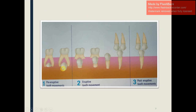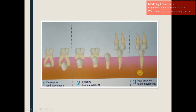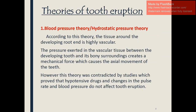Eruptive tooth movement is when the permanent tooth resorbs the roots of the deciduous teeth and moves into its occlusal position — first intraosseously, then extra-osseously as it axially erupts into final occlusion. Post-eruptive tooth movement occurs to compensate for occlusal or proximal wear, or to accommodate jaw growth. Now, theories of tooth eruption — not to be confused with theories of tooth movement — explain how the tooth erupts naturally.